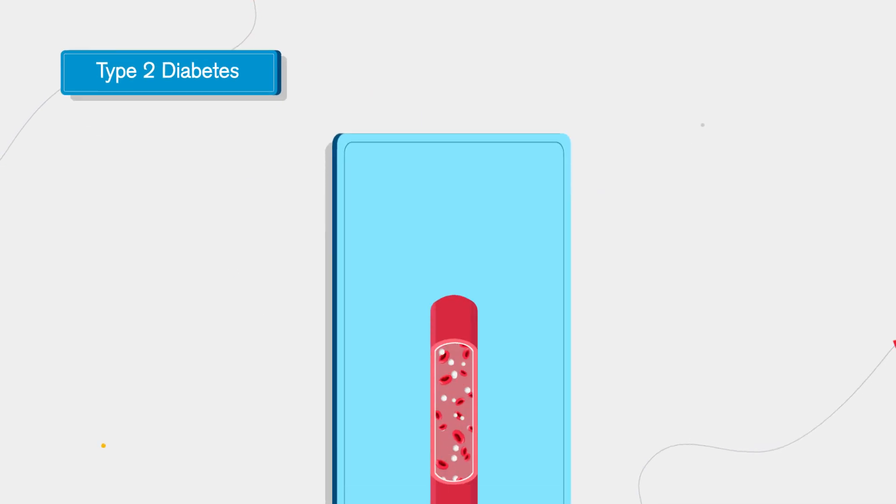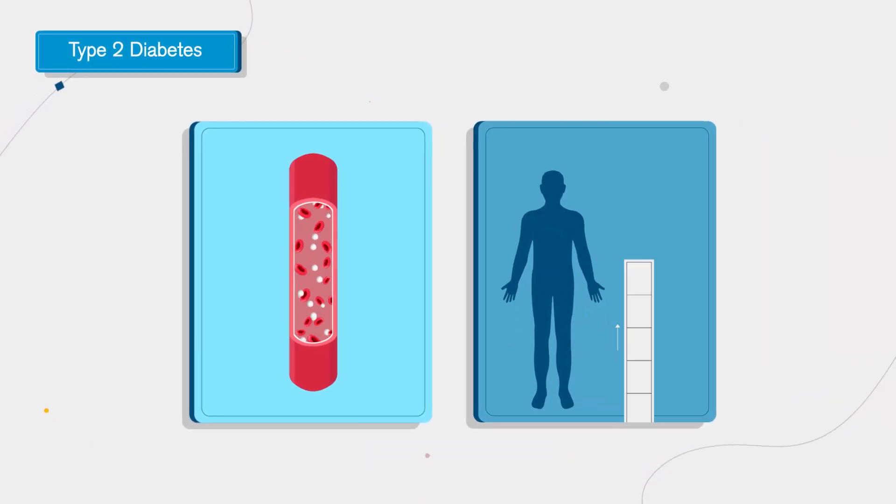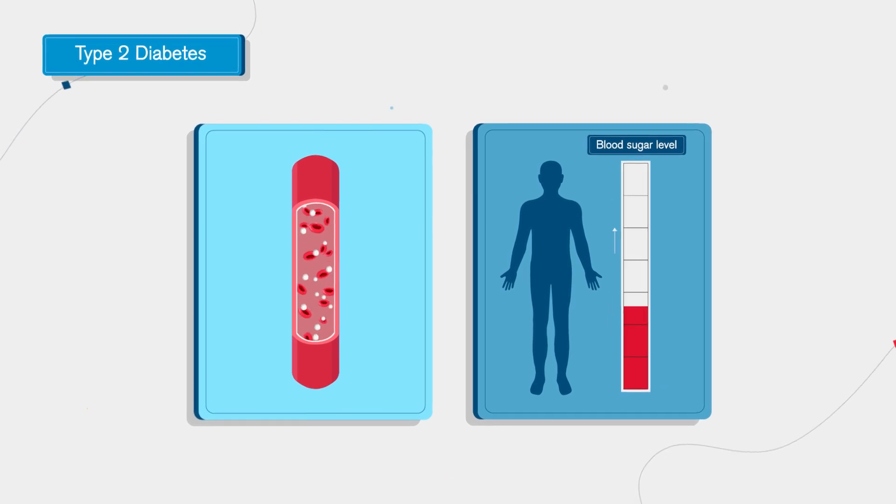Type 2 diabetes is the most common form of diabetes. It occurs when the body becomes more resistant to insulin, making it difficult to regulate blood sugar.